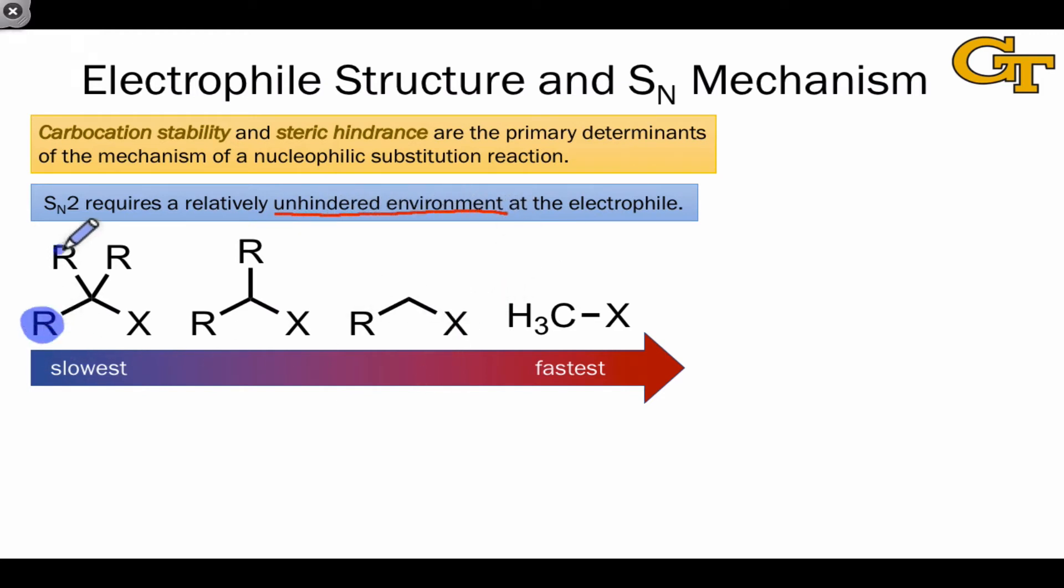Tertiary substrates react extremely slowly. In fact, they don't really react at all in SN2 reactions. Secondary substrates are okay but react relatively slowly, and primary and methyl substrates tend to react quite quickly in SN2 reactions. Here again, there's a very clean dividing line between tertiary substrates and all of the others. Tertiary substrates are off-limits to the SN2 reaction. These don't react at all in SN2 because of the steric hindrance at the electrophilic position.